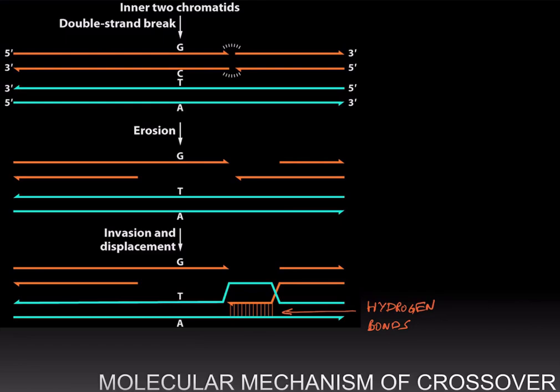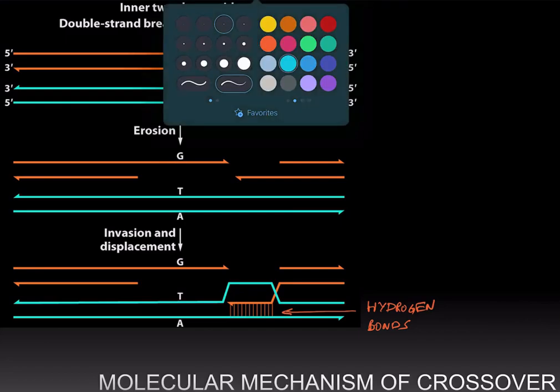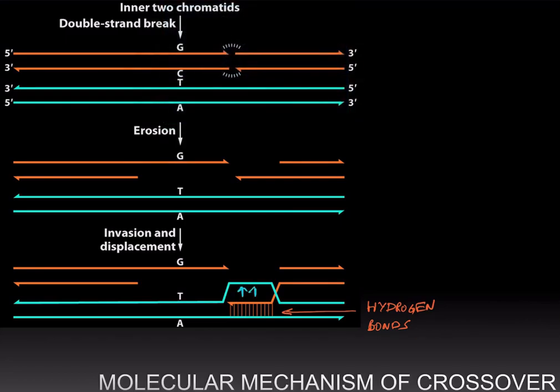As a result, the strand on the blue non-sister chromatid has been displaced and this strand will base pair with the orange non-sister chromatid. So we have one strand of the orange chromatid is base pairing with one strand of the blue non-sister chromatid and the other pair is doing the same.